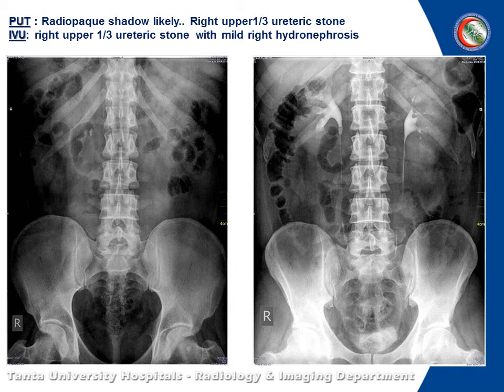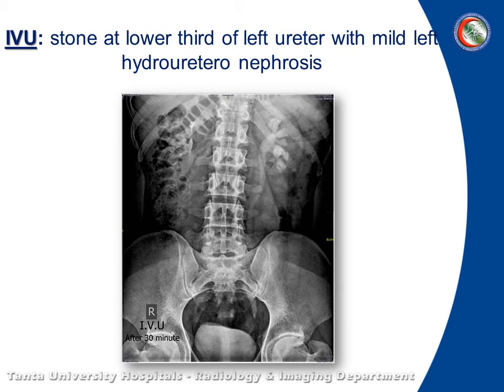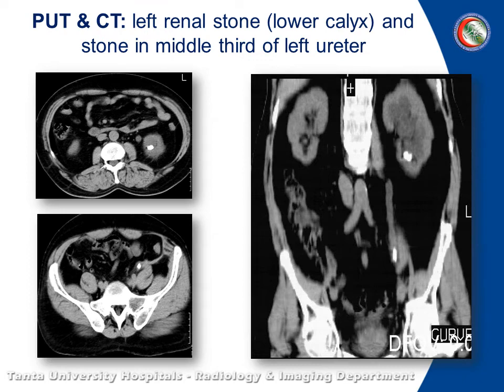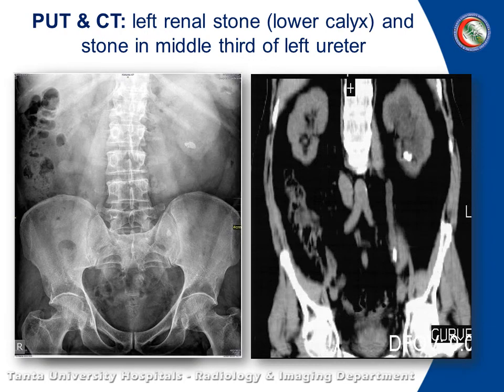Here on plain X-ray you can see a right upper third ureteric stone, and on IVU there is a filling defect in the upper third or proximal ureter. Stone in the lower third of the left ureter with mild left hydronephrosis. This picture shows a stone on CT. Lower calyceal stone as seen on plain X-ray and CT. And there is a middle third left ureteric stone.